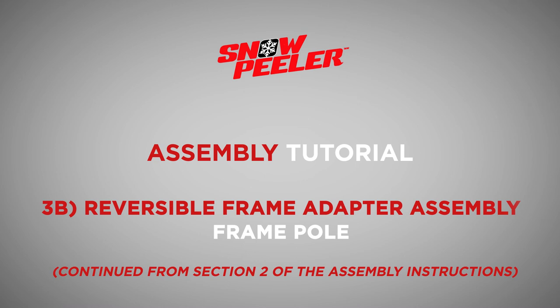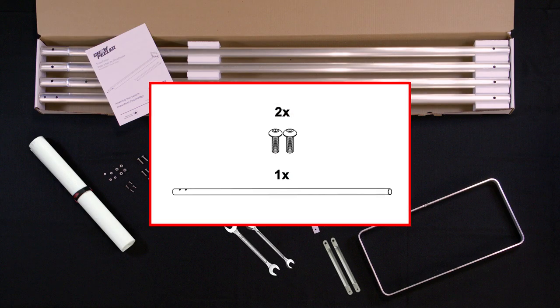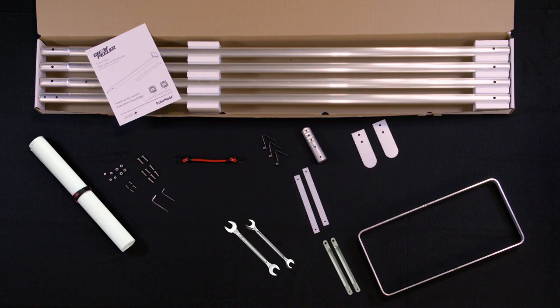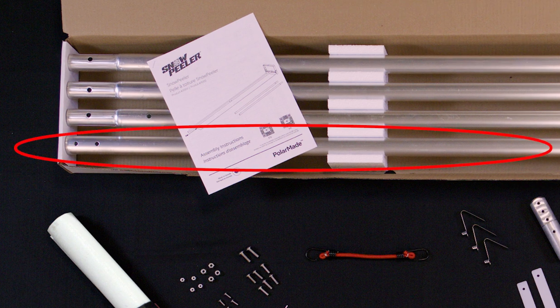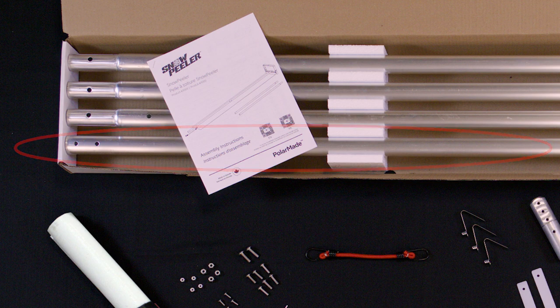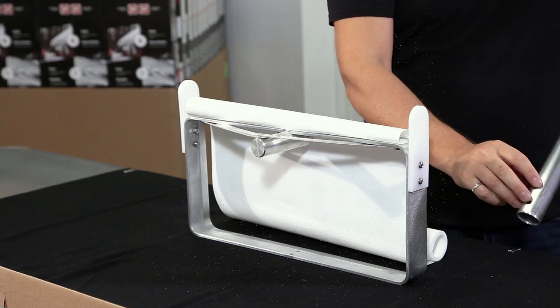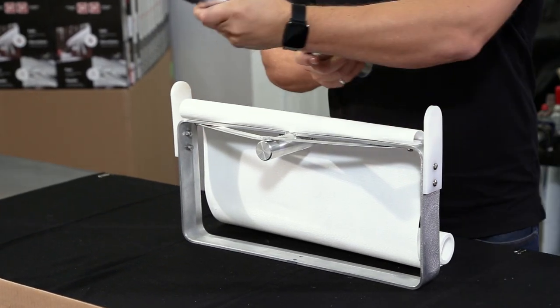Now let's attach the frame pole to the reversible frame adapter. In this section, you'll need the 5 foot frame pole and two quarter inch round head screws. Note the difference between the frame pole and the other three extension poles. The frame pole has two holes drilled in the end and has a consistent diameter end to end. Slide the end of the frame pole over the frame adapter aligning the two holes.